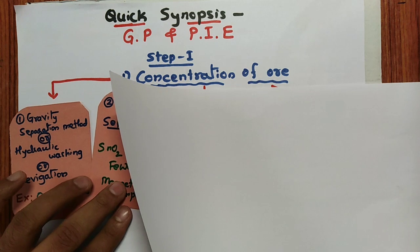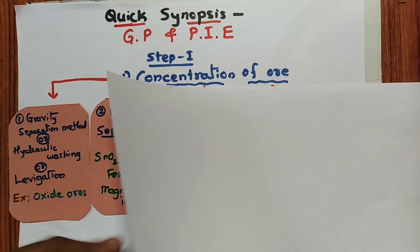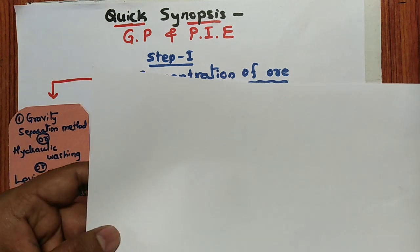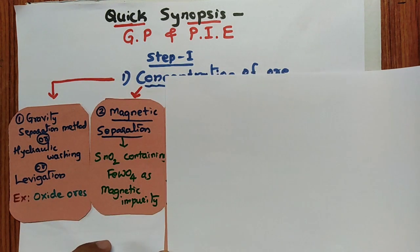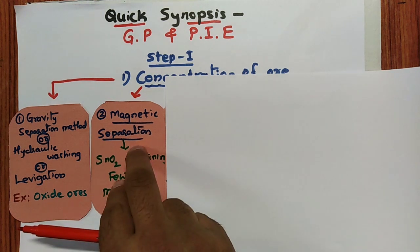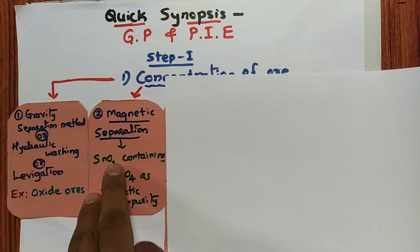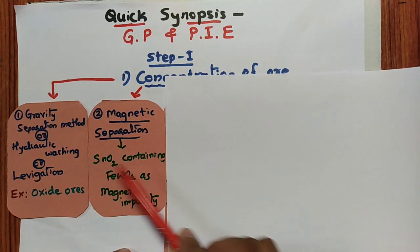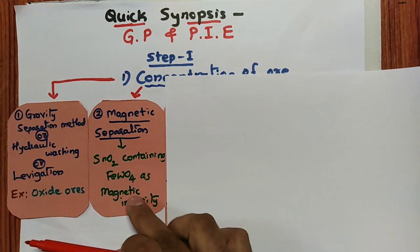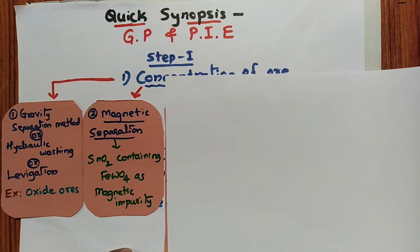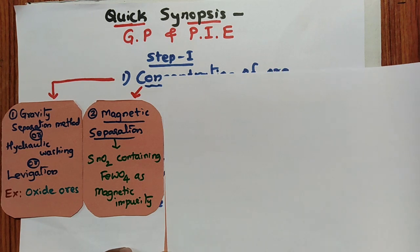The second method is magnetic separation. In magnetic separation, the example is SnO₂ (cassiterite) containing FeWO₄ (wolframite), which has a magnetic impurity. So tin oxide containing wolframite as magnetic impurity can be separated by this method.